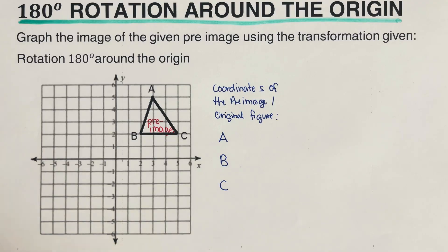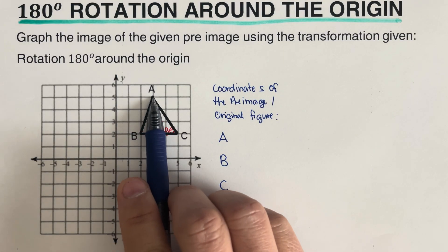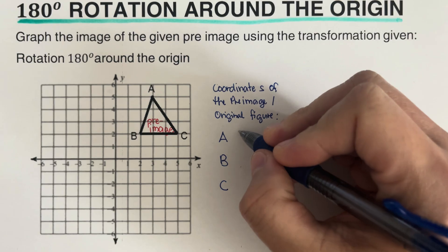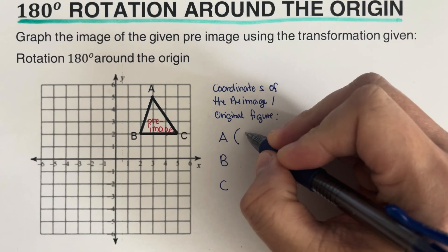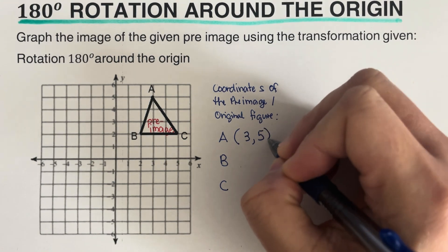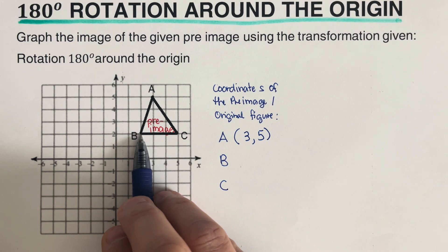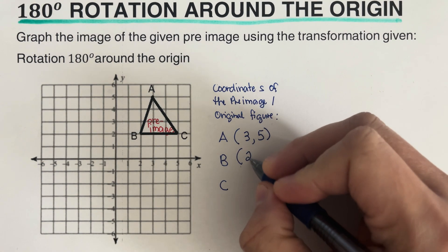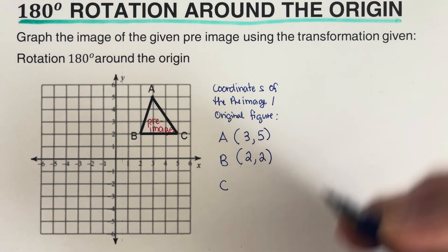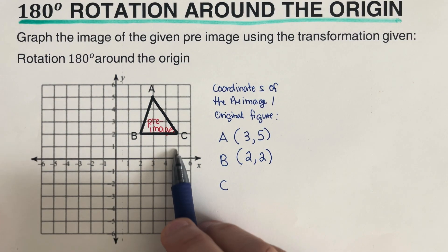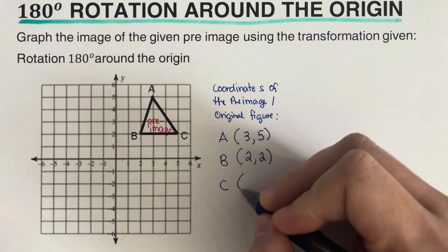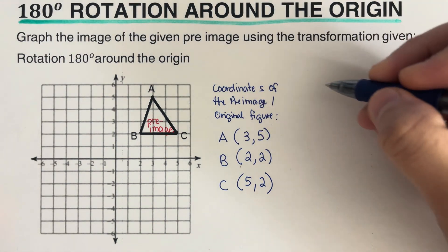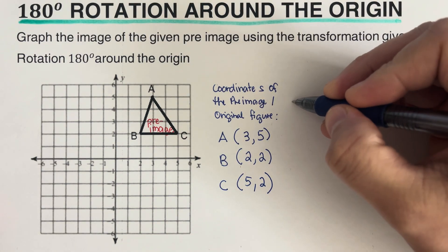Looking at the graph, point A is located at (3, 5), point B is at (2, 2), and point C is at (5, 2). I'll write these coordinates down for the pre-image. Now we need to rotate this figure 180 degrees around the origin.